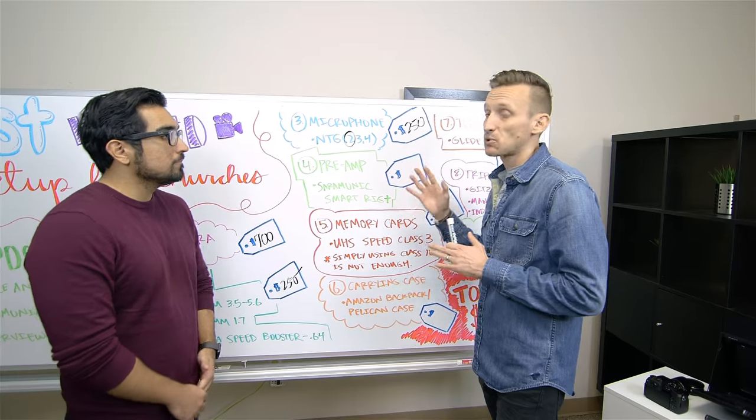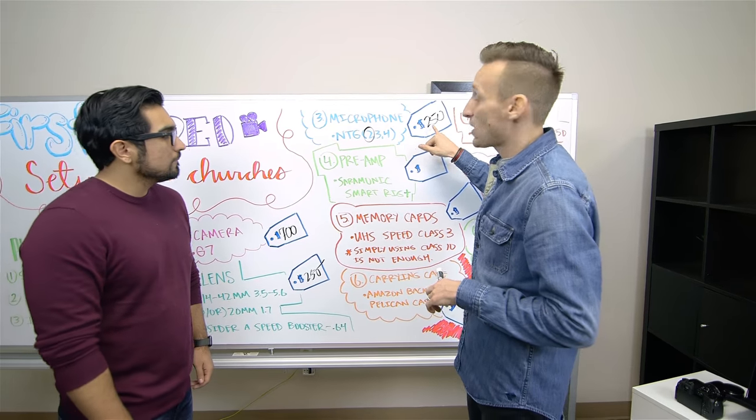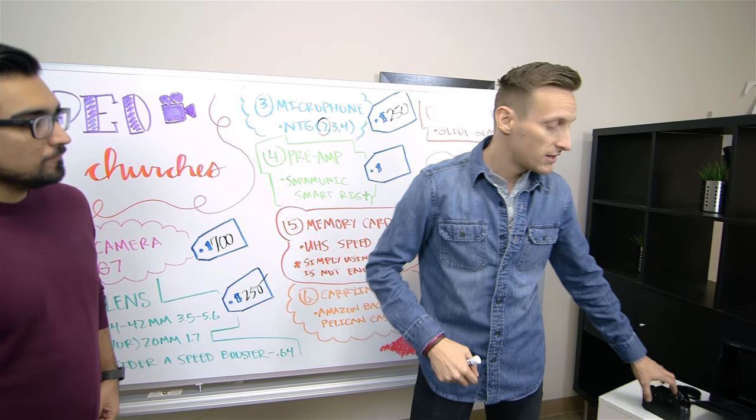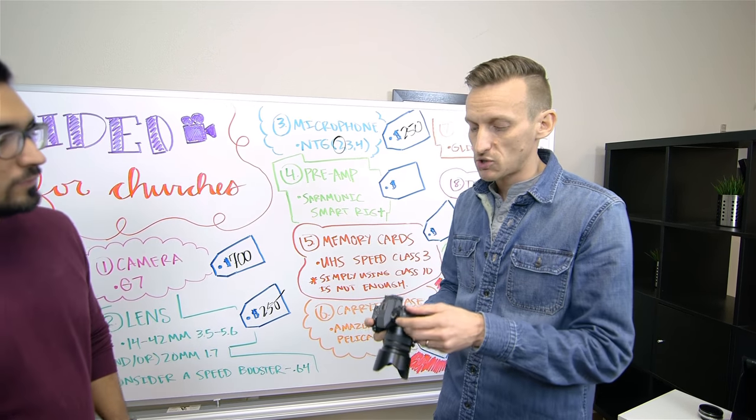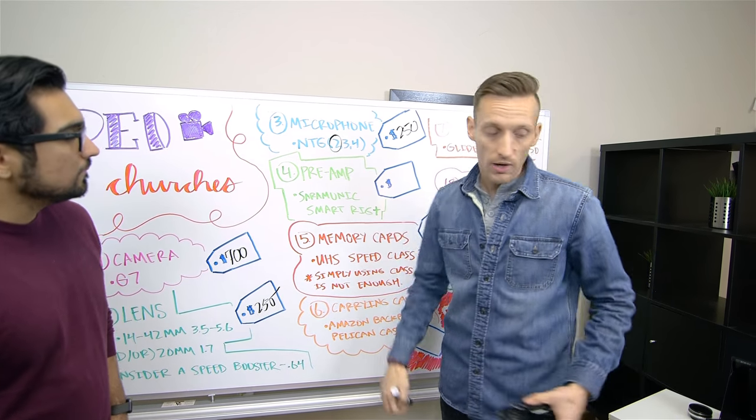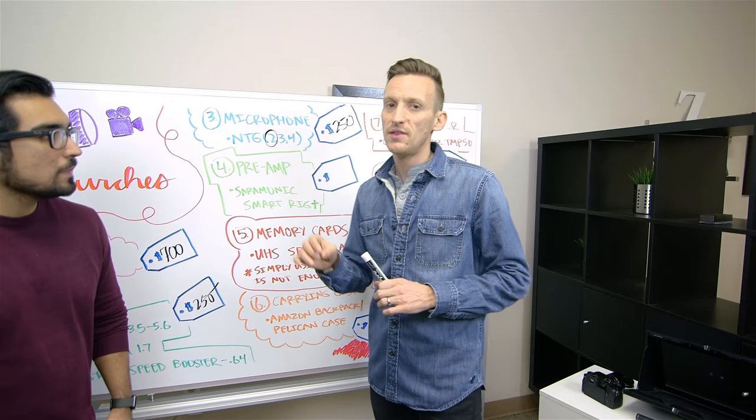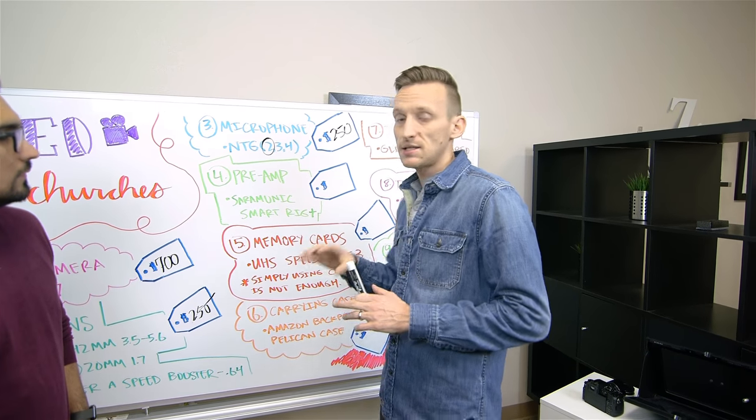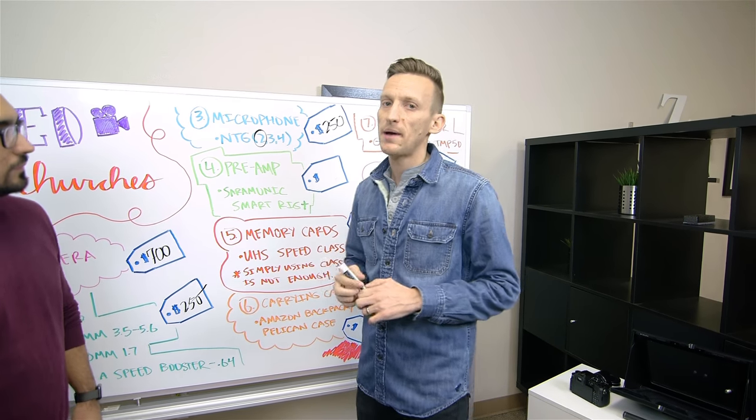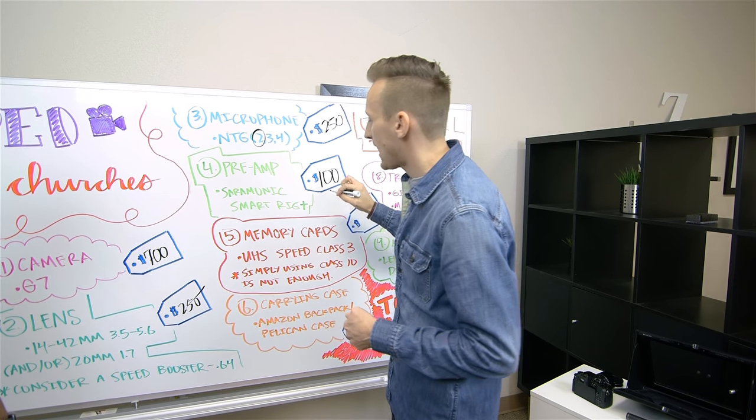Next thing we're looking at is a preamp. Now you may not know what this is. With a preamp, this is going to allow you to bring a quality microphone that has an XLR signal back into the camera. With the G7 that we've talked about, this does not have any XLR inputs, it has one microphone input. That microphone input is going to come out of your preamp. We're going to recommend the Saramonic Smart Rig Plus, and the Plus is important here. There is a Smart Rig that doesn't have the Plus that comes in at around $30, but I'm really going to recommend you get the Plus. It's going to do a lot better and provide what you need for that XLR. That comes in at $100 as we add that to our budget.